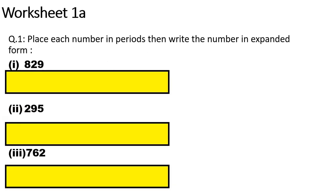This is Worksheet 1A. Question number 1: place each number in periods, then write the number in expanded form. First part is 829. You will write H, T, O, then write 829 equals — how many hundreds? 800. How many tens? 2 tens, so write 20. How many ones? 9 ones, so write 9. Answer: 800 + 20 + 9.